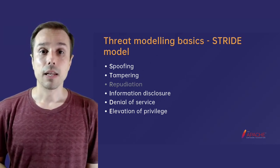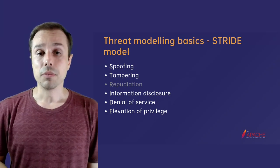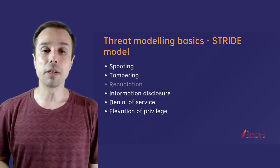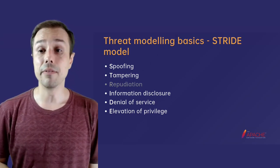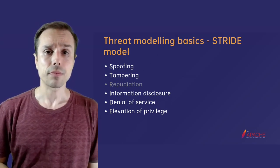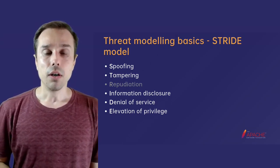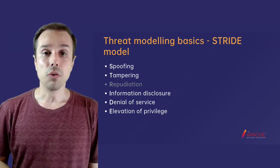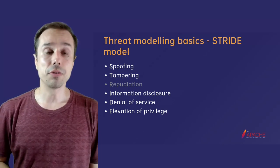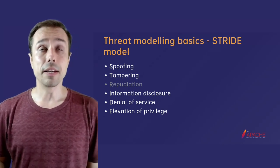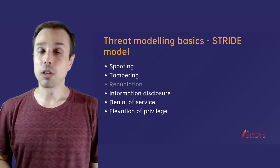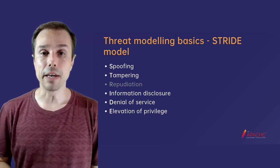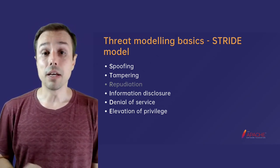One of them is the STRIDE model. STRIDE is an acronym, and it consists of: Spoofing, Tampering, Repudiation, Information Disclosure, Denial of Service, and Elevation of Privilege. These are all factors that you need to take into account using the STRIDE model. For instance, information disclosure is in the realm of confidentiality — it is something you do not want to happen to your application. Denial of service is availability.